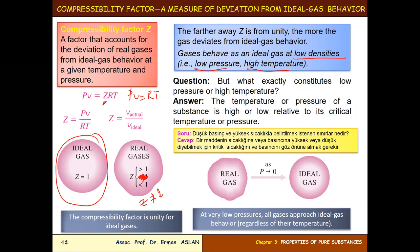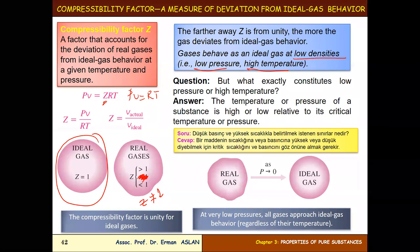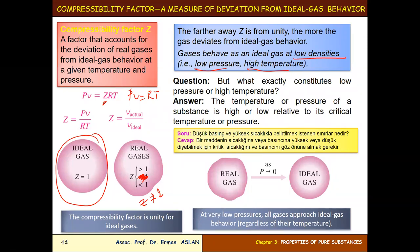What exactly constitutes low pressure or high temperature? In Turkish: to call a substance's temperature or pressure high or low, we need to consider the critical temperature and critical pressure of that substance. We will go into detail on this in the next slide.